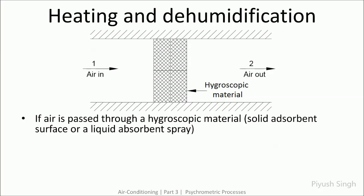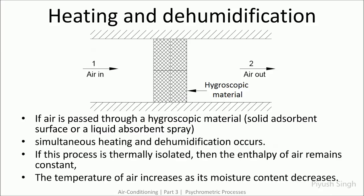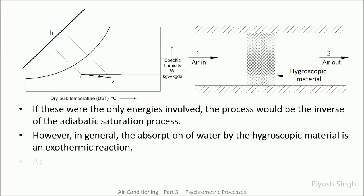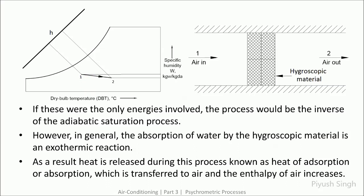The next process is heating and dehumidification. In this case, the air is passed through a hygroscopic material, which may be a solid absorbent or a liquid absorbent spray. Due to this process, simultaneous heating and dehumidification occurs. If the system is thermally insulated, the enthalpy of air remains constant; temperature of air increases as its moisture content decreases. Although the absorption of water by hygroscopic material is an exothermic reaction causing an increase in enthalpy, for all numerical calculations this process is assumed to be a constant enthalpy process unless otherwise mentioned.